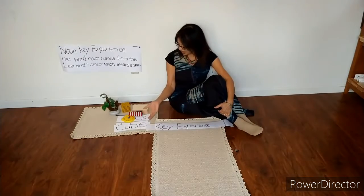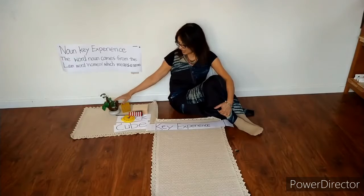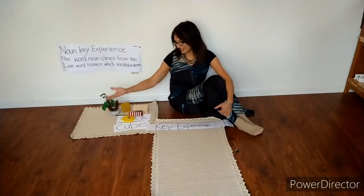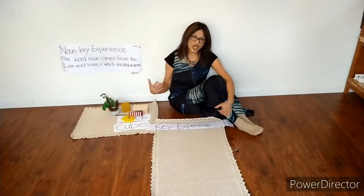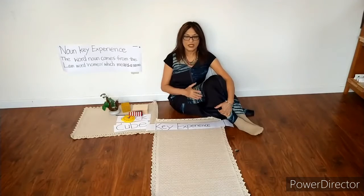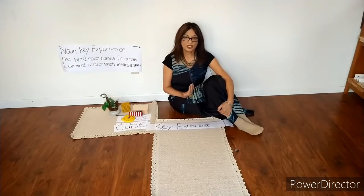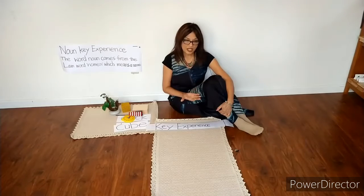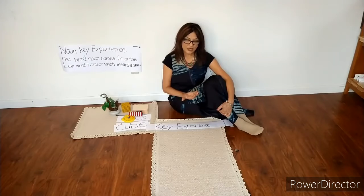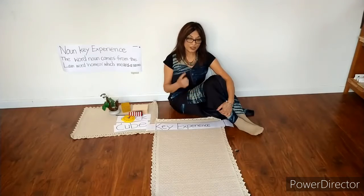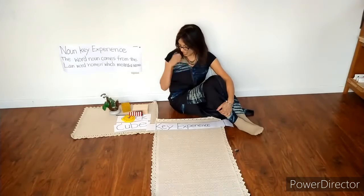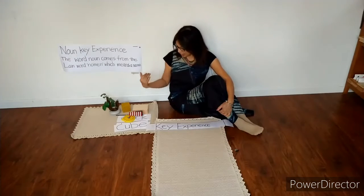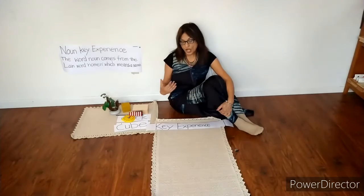If I ask a child, give me this or give me that, the child may not be able to bring me the right objects because I did not give it a name. The child must know the name of the objects in order to bring it to me. So, all the objects have a name. Naming words are called noun.